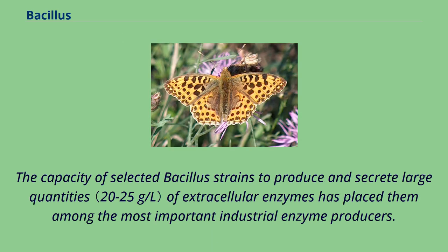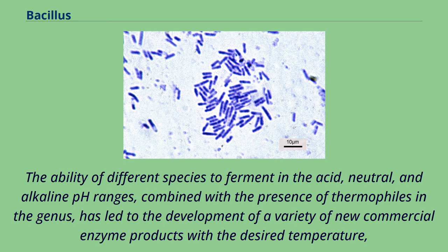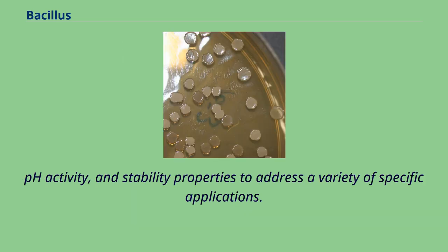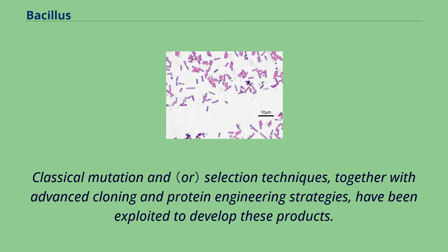The capacity of selected Bacillus strains to produce and secrete large quantities of extracellular enzymes has placed them among the most important industrial enzyme producers. The ability of different species to ferment in acid, neutral, and alkaline pH ranges, combined with the presence of thermophiles in the genus, has led to the development of a variety of new commercial enzyme products. Classical mutation and selection techniques, together with advanced cloning and protein engineering strategies, have been exploited to develop these products.